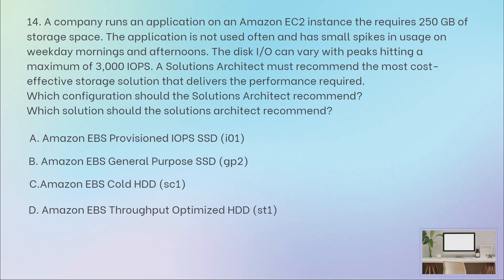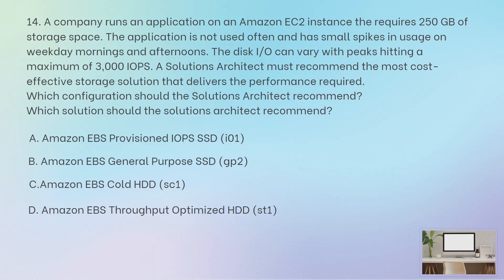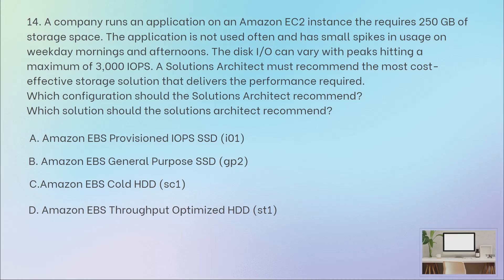Coming back to the question: you have an application on EC2 requiring 250 GB storage space. It is not used often — only having some usage on weekday mornings and afternoons — and disk IO is hitting a maximum of 3000 IOPS. The cost-effective option here is GP2, that is general purpose SSD. Between 100 IOPS and a maximum of 16,000 IOPS is the scale you have for GP2. It offers cost-effective storage ideal for a broad range of workloads, delivering single-digit millisecond latencies and the ability to burst to 3000 IOPS. So GP2 is the correct answer.